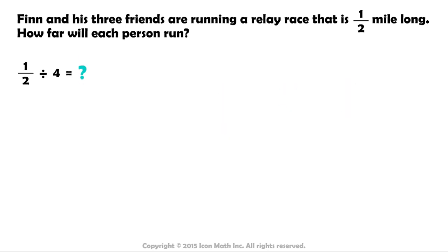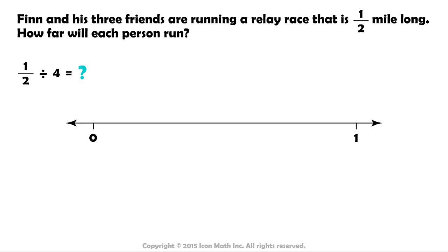Let's evaluate this using the number line first. We draw a number line and number it from zero to one. The total distance of the race is represented in the expression by one half. So let's draw a line from zero to one half in red to represent the total distance they will run. The divisor four means that we must break one half into four equal parts. What fraction represents the size of each part? This will be the answer to our expression.